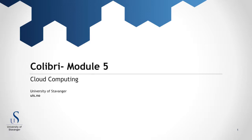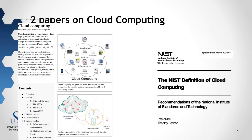Welcome to module 5 of the Calibre project. This part is about cloud computing and consists of two papers on the topic. The first one is from Wikipedia, defining what it is and how it can be applied. The second paper provides more exact definitions from the National Institute of Standards and Technology in the US, defining cloud computing and recommendations about it.